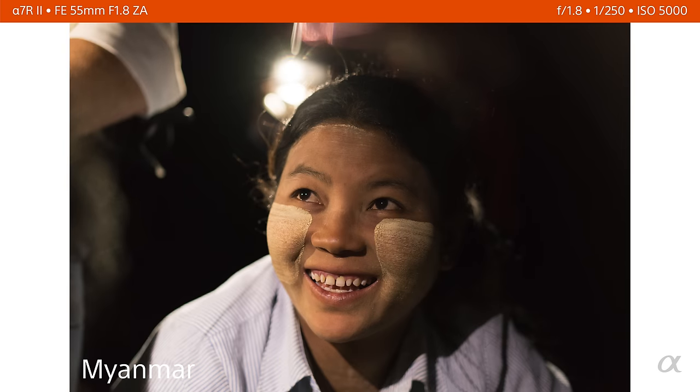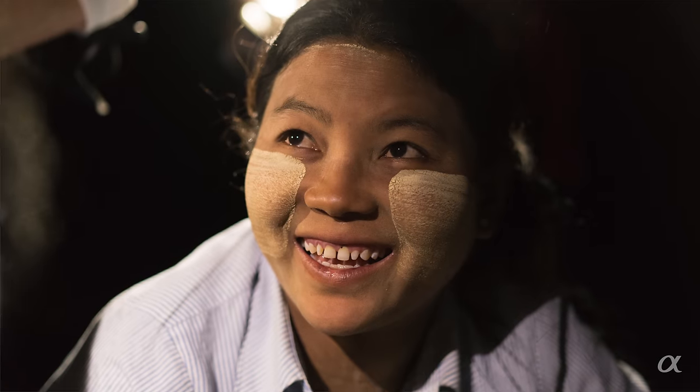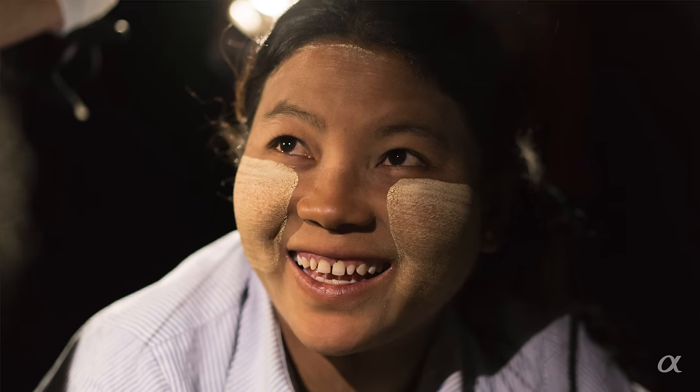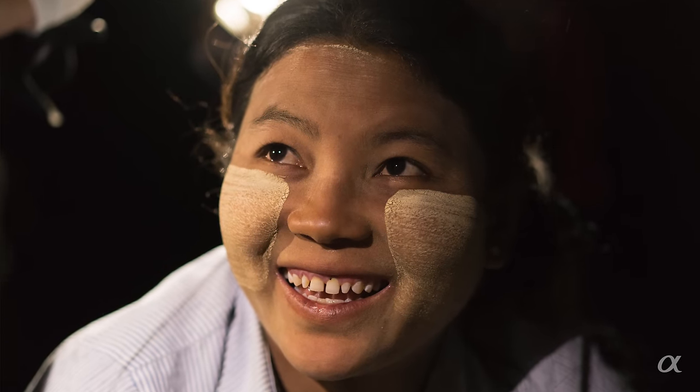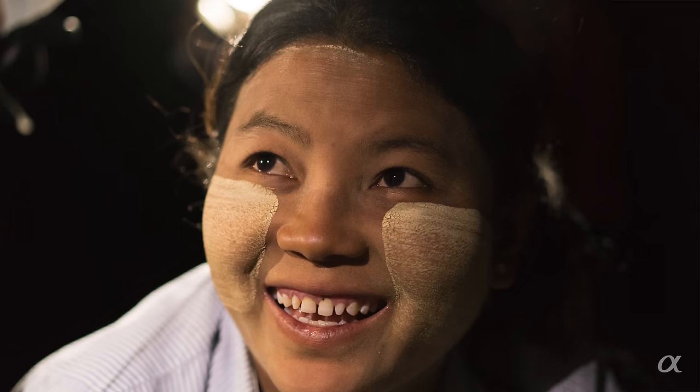In Myanmar, we were out on the street and this girl was selling some jewelry and I just love the paint on her face. It's called Tanaka. And she was lit with the flashlights and camera phones. I'm shooting her again, 5,000 ISO. And here's a moment. I waited and waited till she turned her eyes up and smiled and I got the moment.